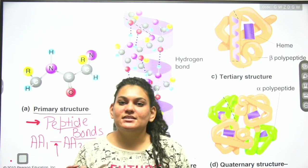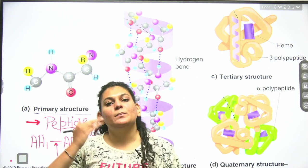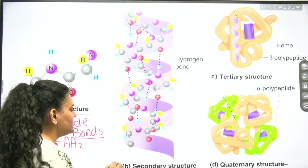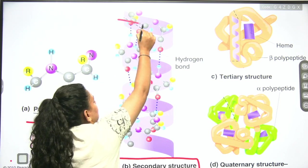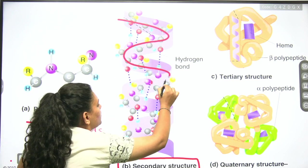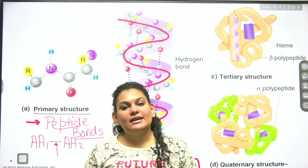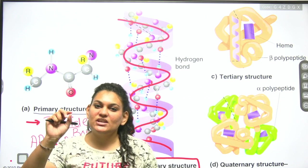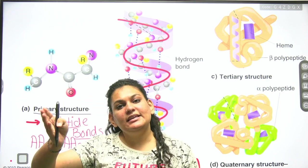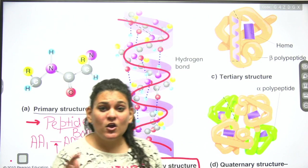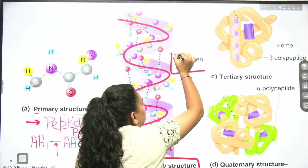From the primary structure, when more amino acids are added, it becomes a long chain — a basic protein structure. To make a more complicated structure, we get the secondary structure. In the secondary structure, the protein chain becomes coiled. The major bond in the secondary structure is the hydrogen bond.